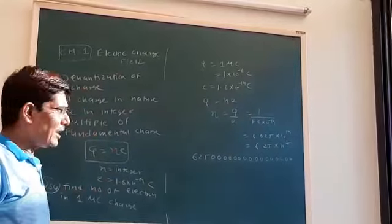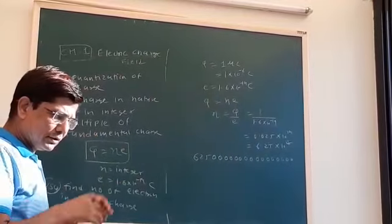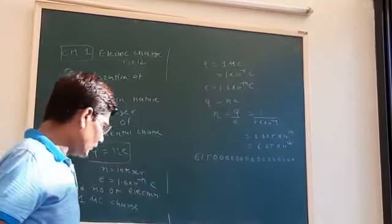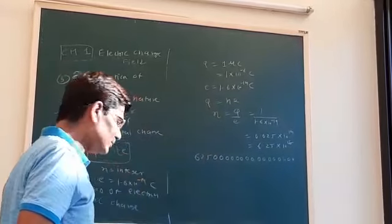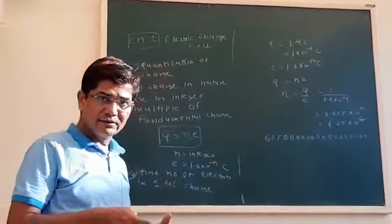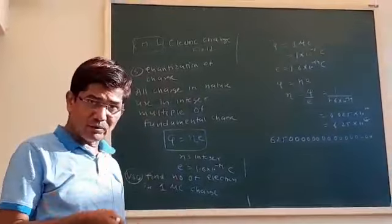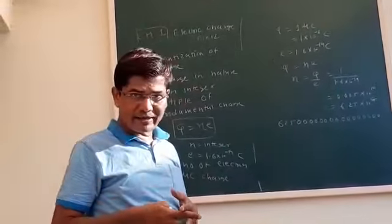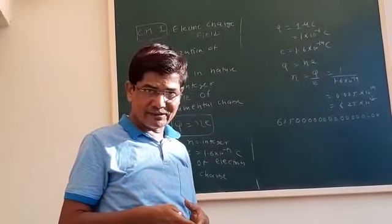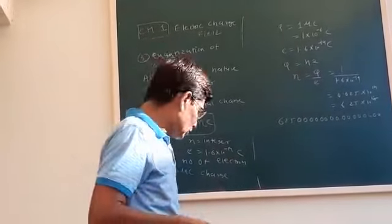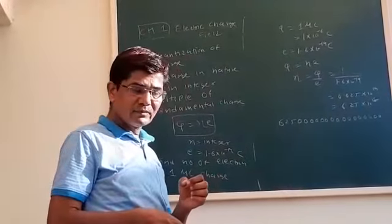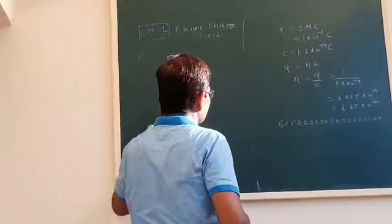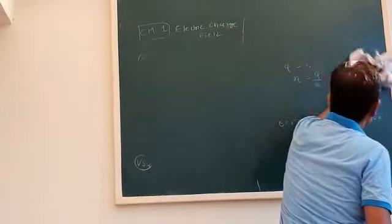All the charges in nature are integer multiples of the fundamental charge, which is the charge of the electron. Next, we have to see how we can detect the presence of a charge on a body, such as a metal plate. We have a very simple device called the electroscope.